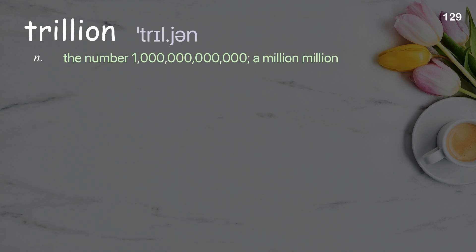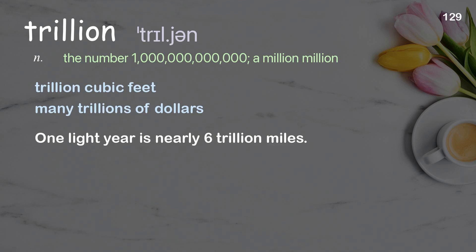Trillion: the number one trillion — a million million. Examples: trillion cubic feet, many trillions of dollars. One light year is nearly six trillion miles.